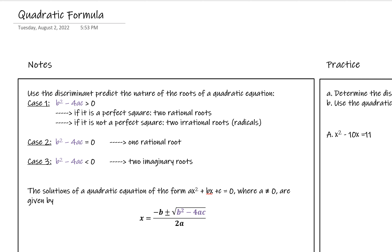We have three main cases. Case one has two different situations. Our first case is when the inside of that radical, or the discriminant, is greater than zero. That means it's going to be a positive number, so we're actually going to get a rational answer — either a decimal, or we'll simplify our square root in this case.